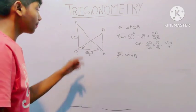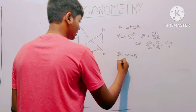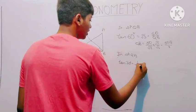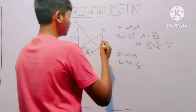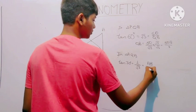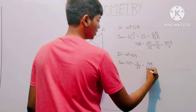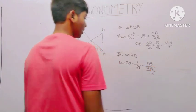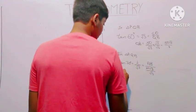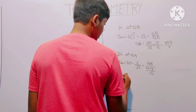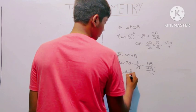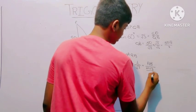We need to find the base. Tan 30 degrees is equal to 1 by root 3. So the base QB works out to 50 root 3 upon 3. Then using this, we get 1 by root 3 equals height over base, giving us 50 root 3 upon 3. Note: this denominator is 3, not root 3.